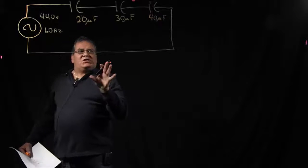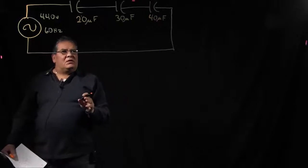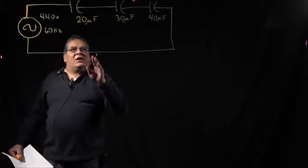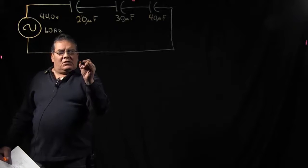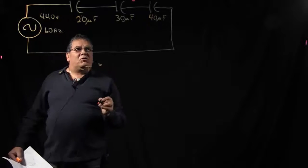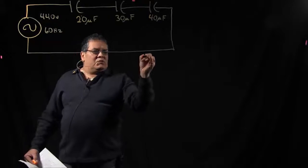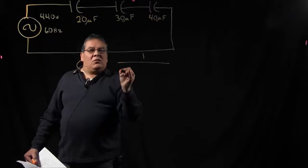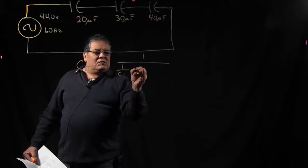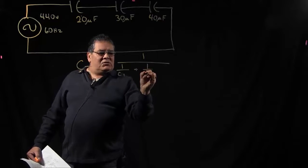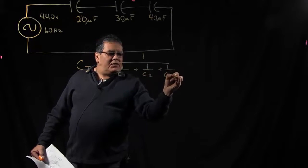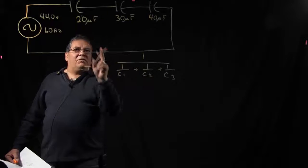Now this is pretty much the reverse of what you would do in a resistive series circuit to find total resistance. For your capacitance total, you're going to need to use the reciprocal formula, which would be 1 over (1 over C1 plus 1 over C2 plus 1 over C3). So we'll just plug in our values.